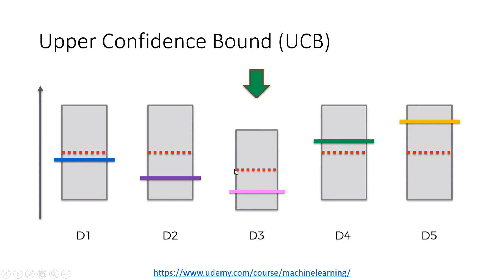Then we are going to repeat this process for all the other machines. It's not random — we are going to select the machine that has the highest upper bound. In this case, the first machine is not going to be selected anymore because its upper bound has decreased a lot. We are going to randomly select across the other machines now, because they all have the same upper bound.